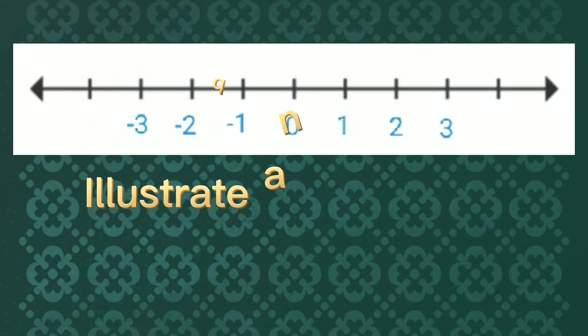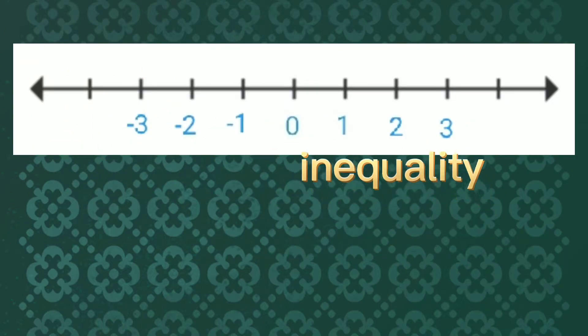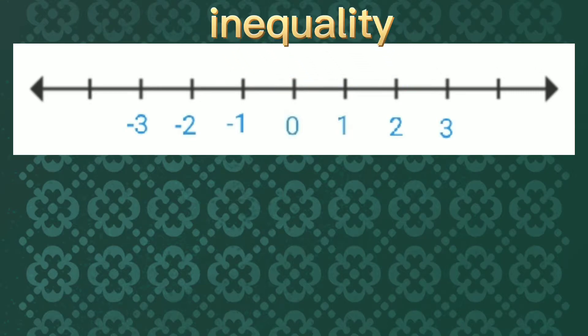Here is an illustration of inequality using the number line. This is so simple. Let's take 1 versus 2. 1 is not equal to 2 because 1 is less than 2, or 2 is greater than 1.